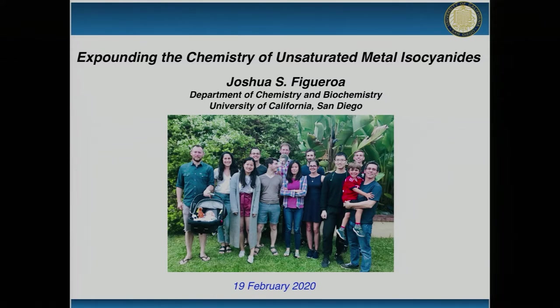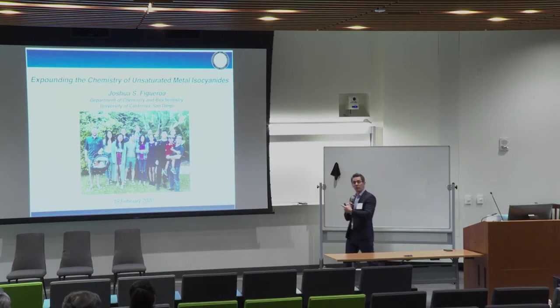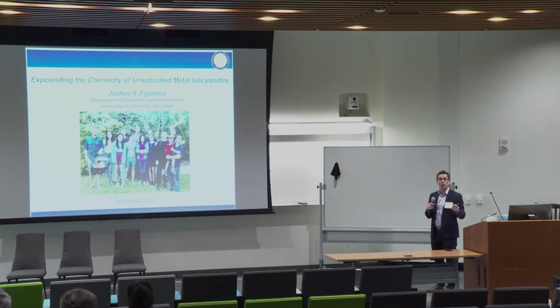What organometallic chemistry is, in brief, is the manipulation of the transition elements - those scary elements in the middle of the periodic table with organic matter, and also the alternative, the manipulation of organic matter by the transition elements as well.